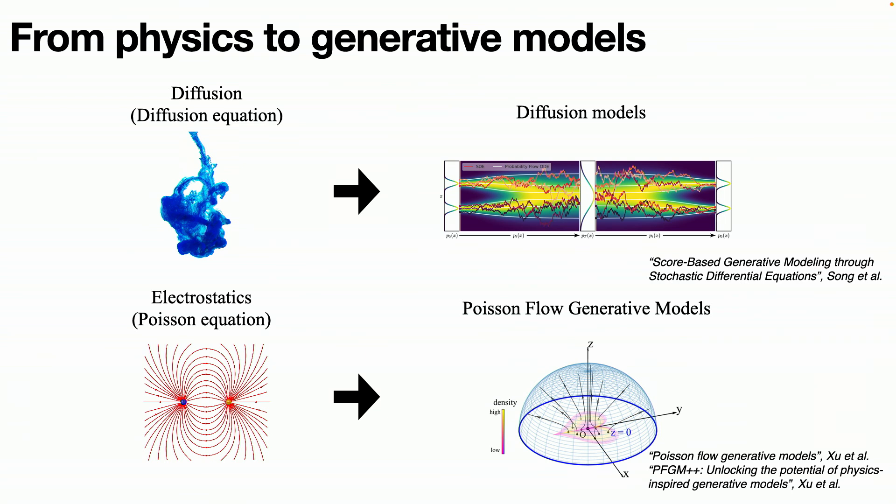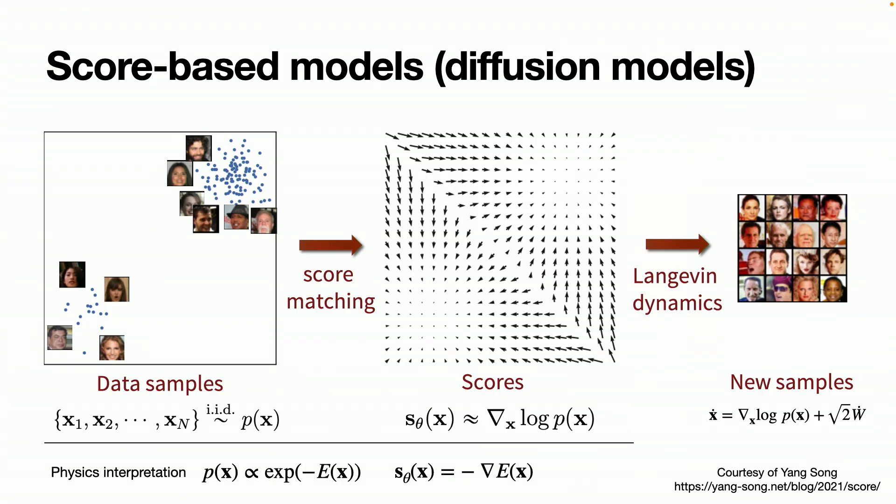One called the diffusion models, basically leverage the idea of diffusion equation in thermodynamics. Another family of the model is called Poisson flow generative models. By the way, I'm also one of the co-author on this line of work. So the Poisson flow models leverage the idea of electrostatics, specifically the Poisson equation, and use the Poisson equation to build this line of Poisson flows. So let me briefly review how these models work.